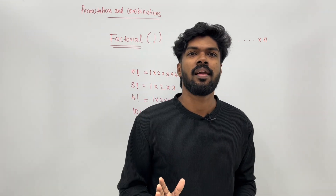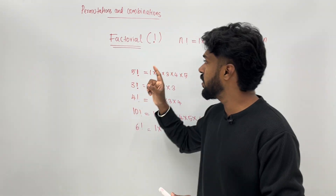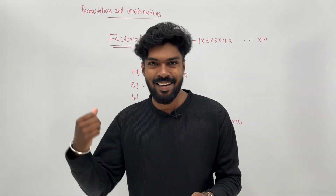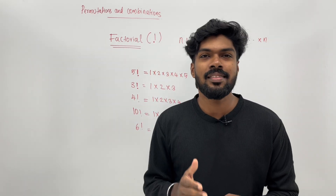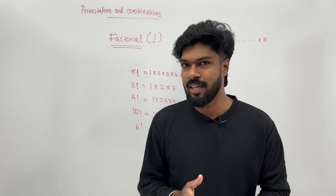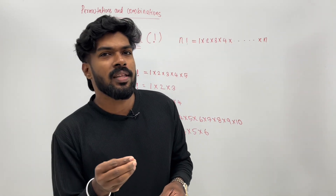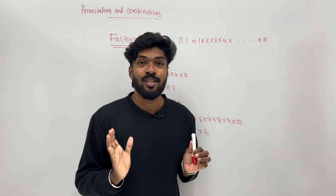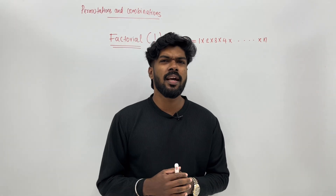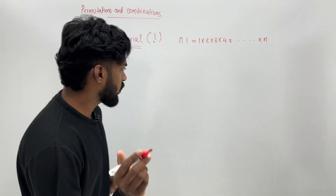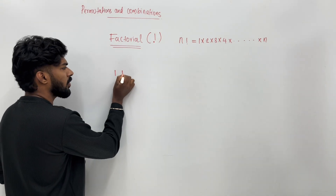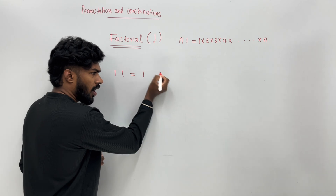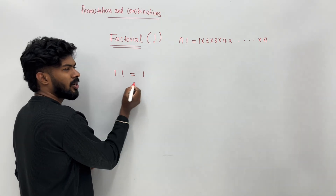So, what is the factorial? In the factorial, we have an exclamation mark. That is the symbol we use. We will tell you how to use the factorial. With the first number, we multiply by the first. We have no line with the first.